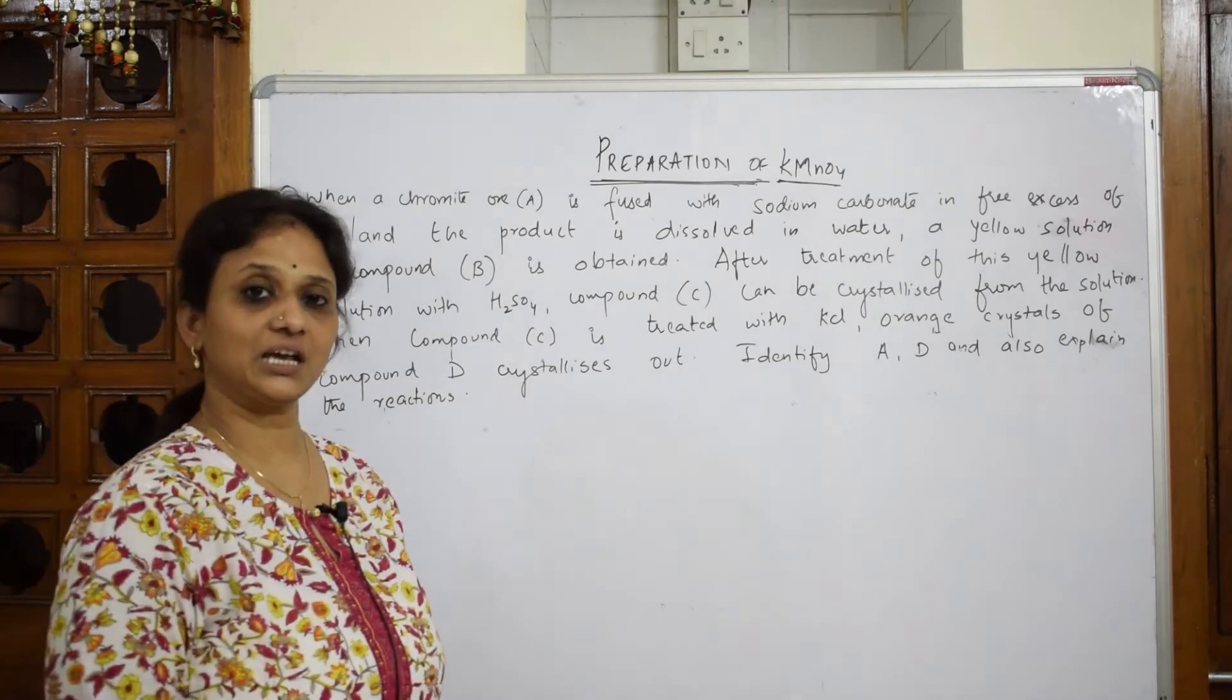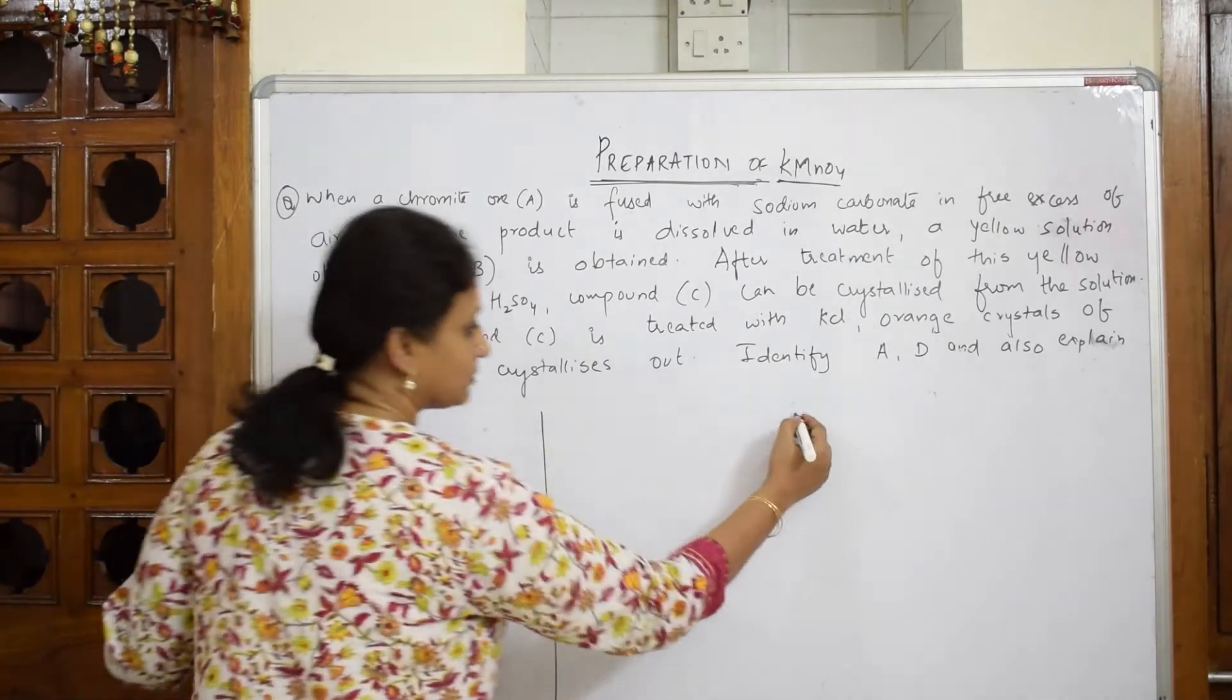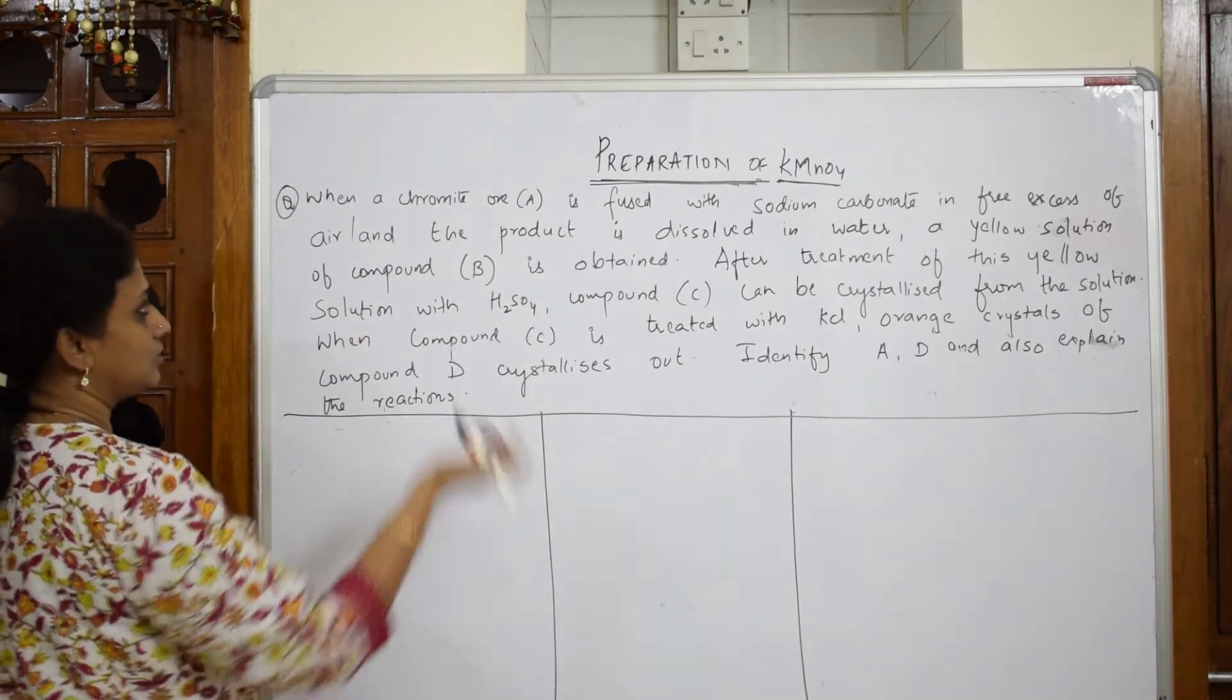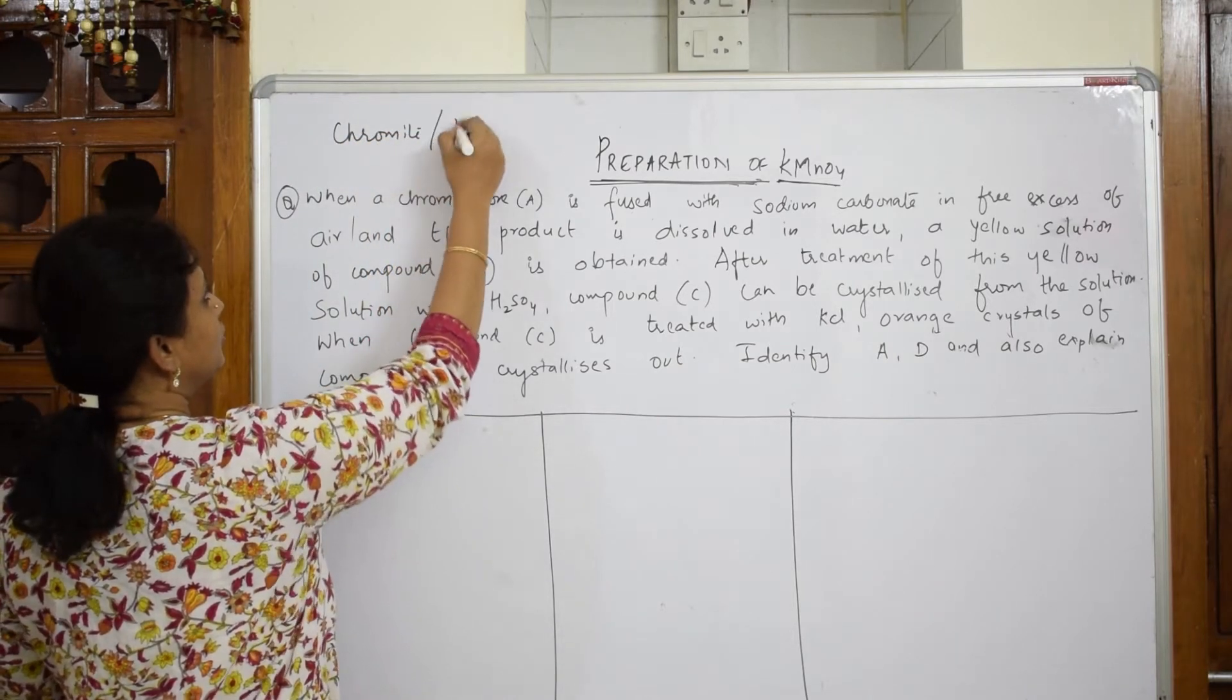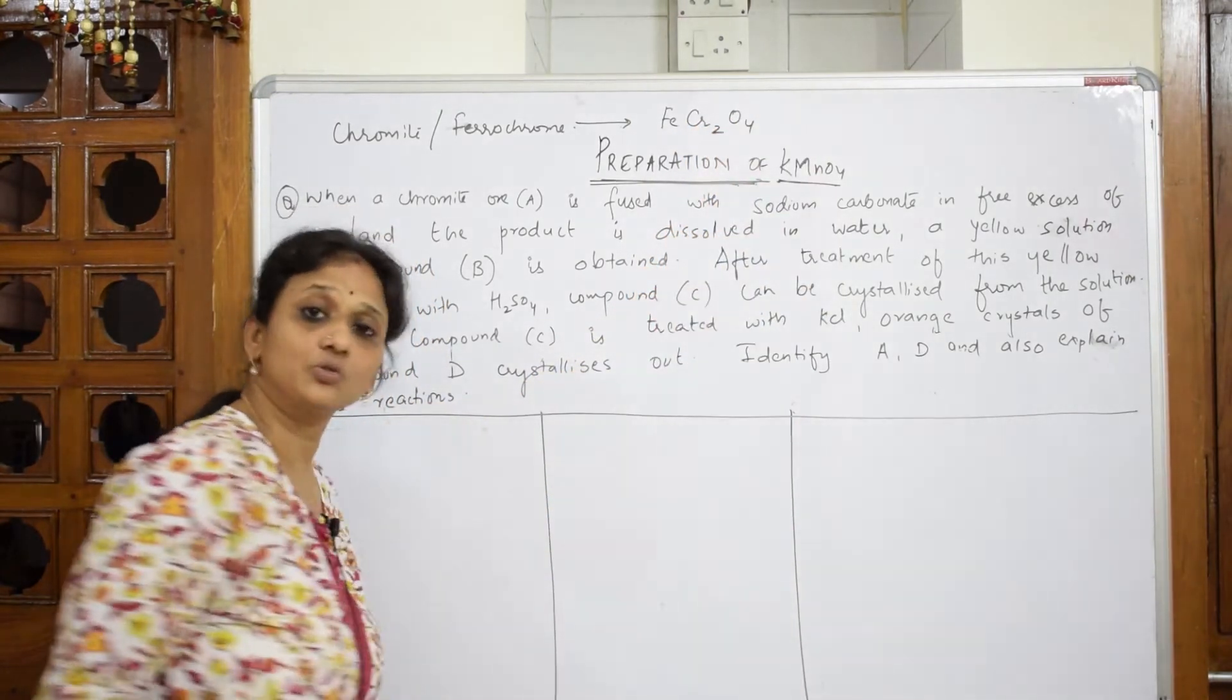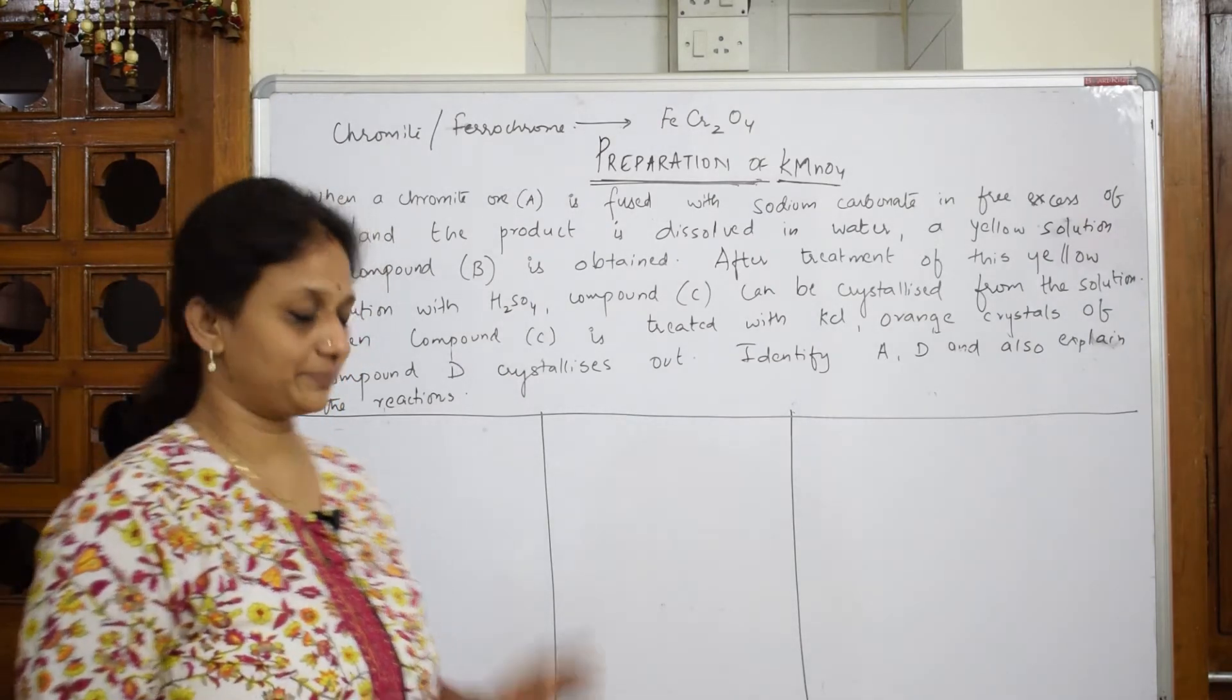I am going to prepare today potassium dichromate with your ore called chromite or ferrochrome. First, let me divide the page into three because I need space. When I divide the page into three, first important thing you have to remember is what is either ferrochrome or chromite ore. Your chromite ore or your ferrochrome both are same. Formula is FeCr2O4. This is ferrochrome. I am going to use this and prepare our orange crystals of potassium dichromate.